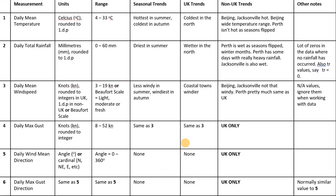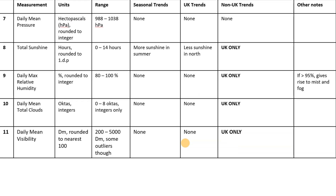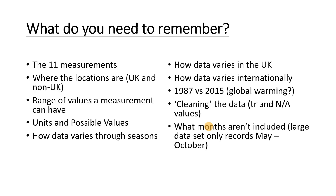Here is just a table summarising everything I've said, if you want it for your notes — this is for measurements 1 to 6, and then measurements 7 to 11. So just to recap: you need to know the 11 measurements, remember broadly the eight locations and where they are in the UK and in the world for non-UK ones. You need to remember the range of values a measurement can have — I want to emphasise this, as they've asked quite a few exam questions based around this. You really need to know the units and the possible values each measurement can give out.